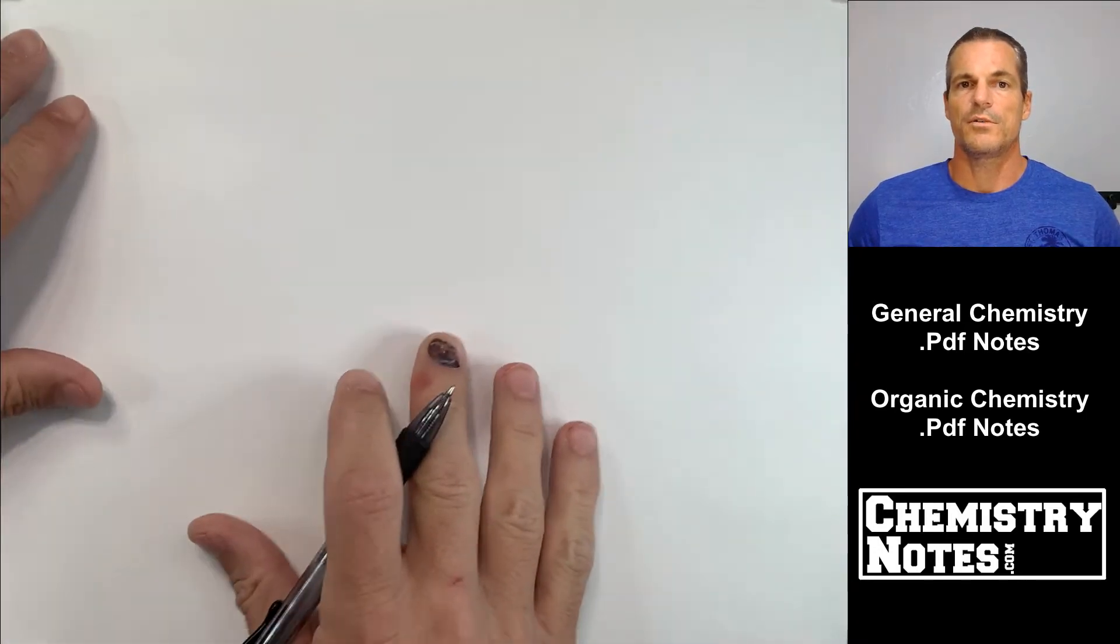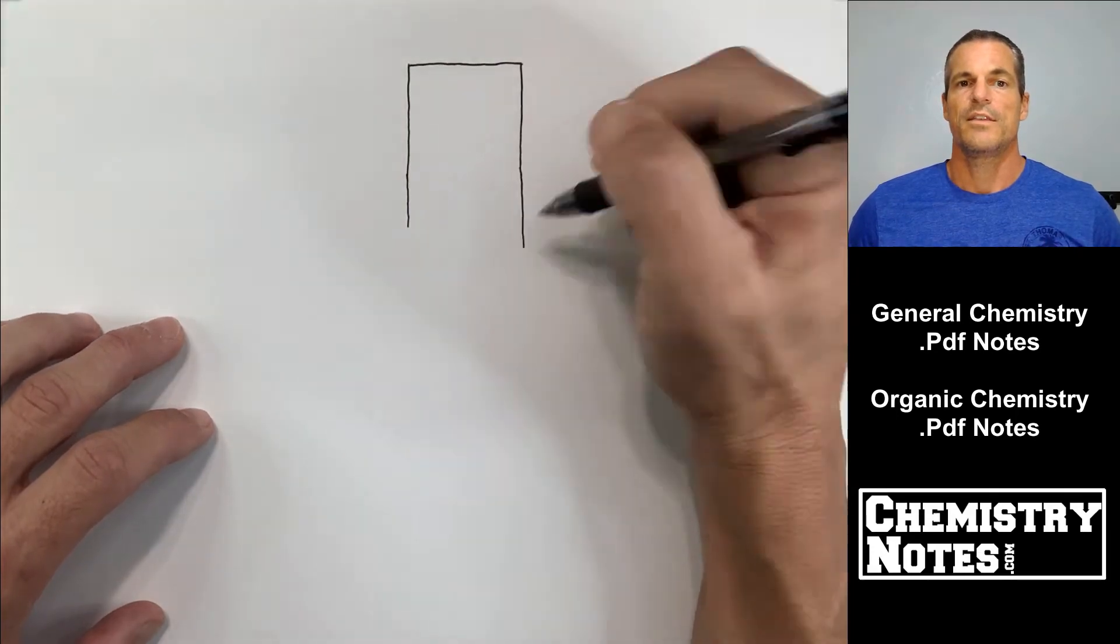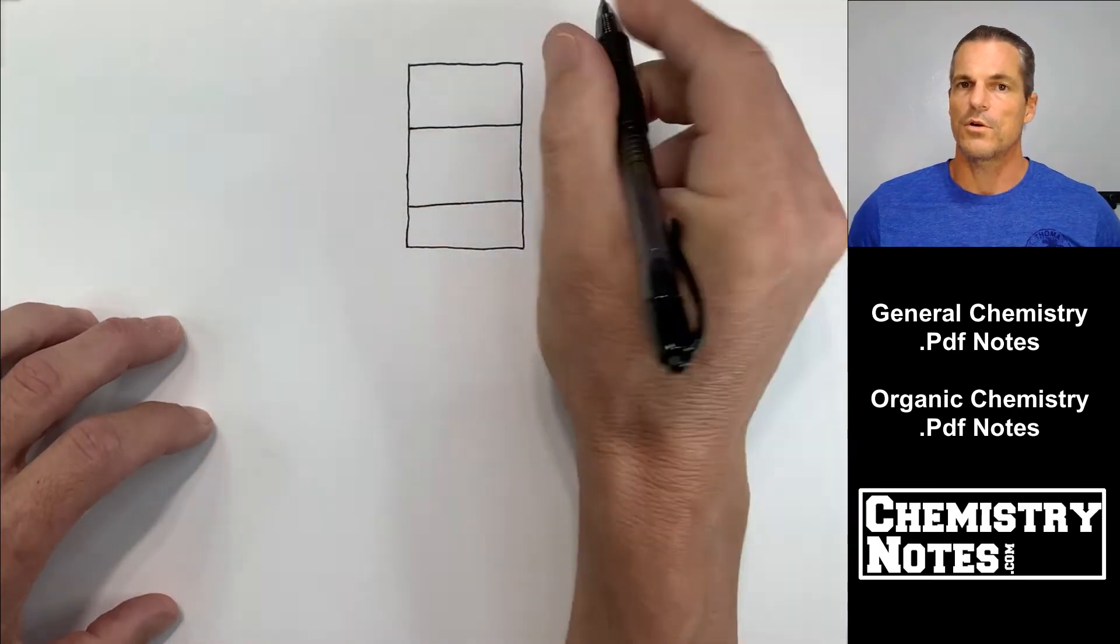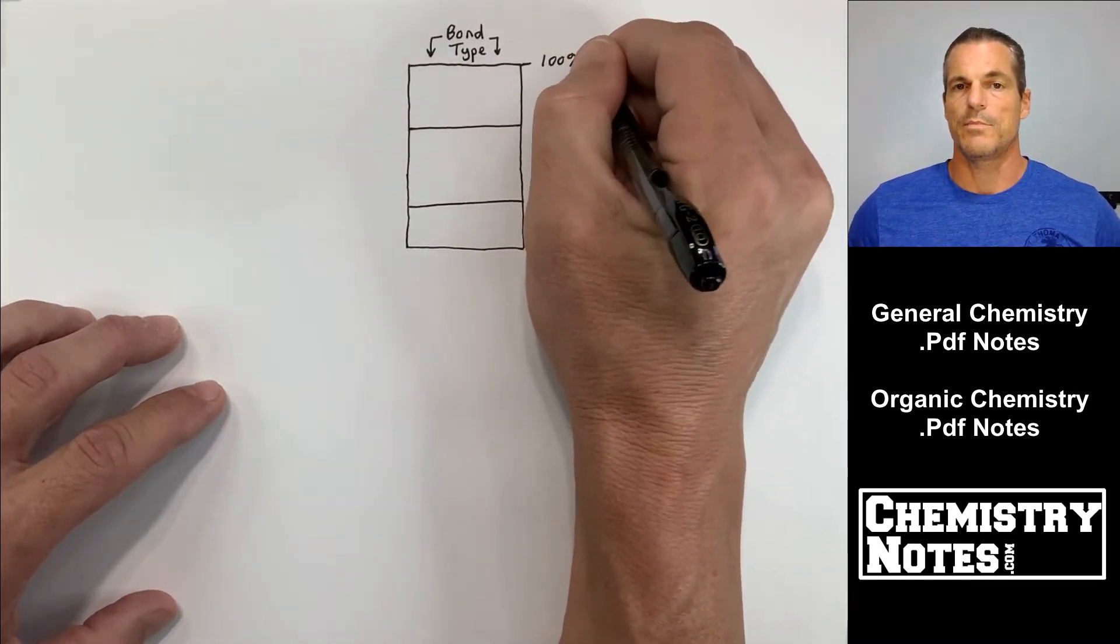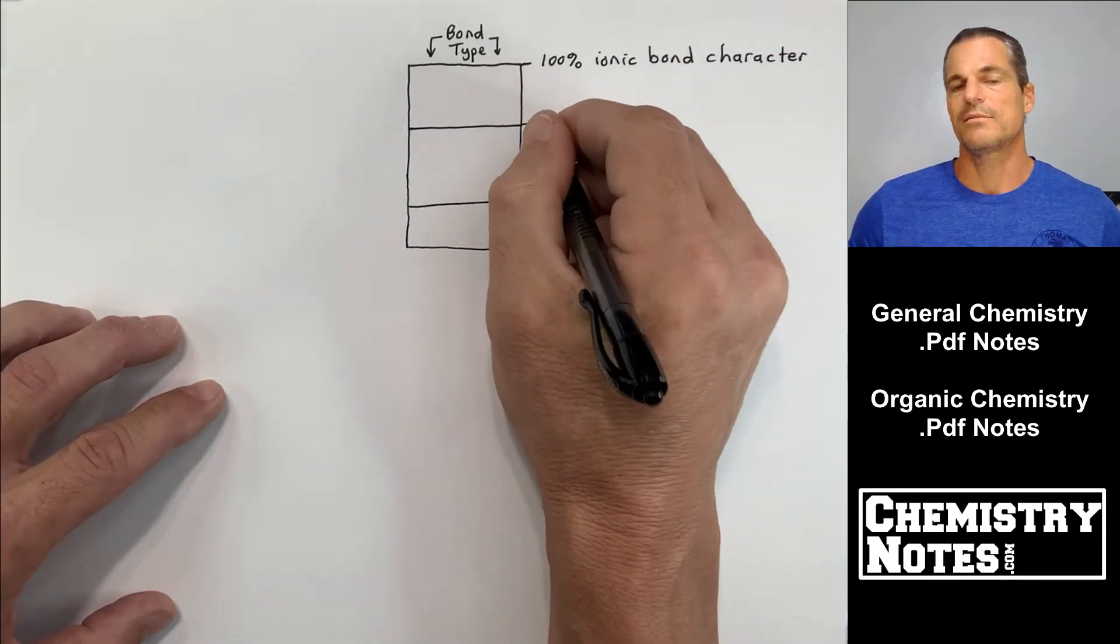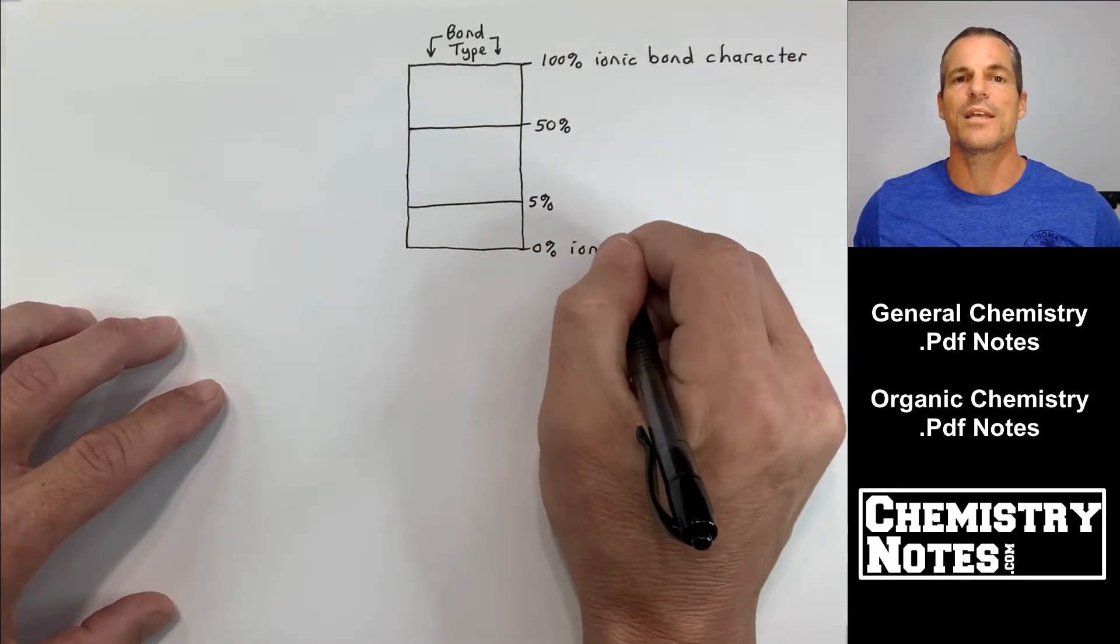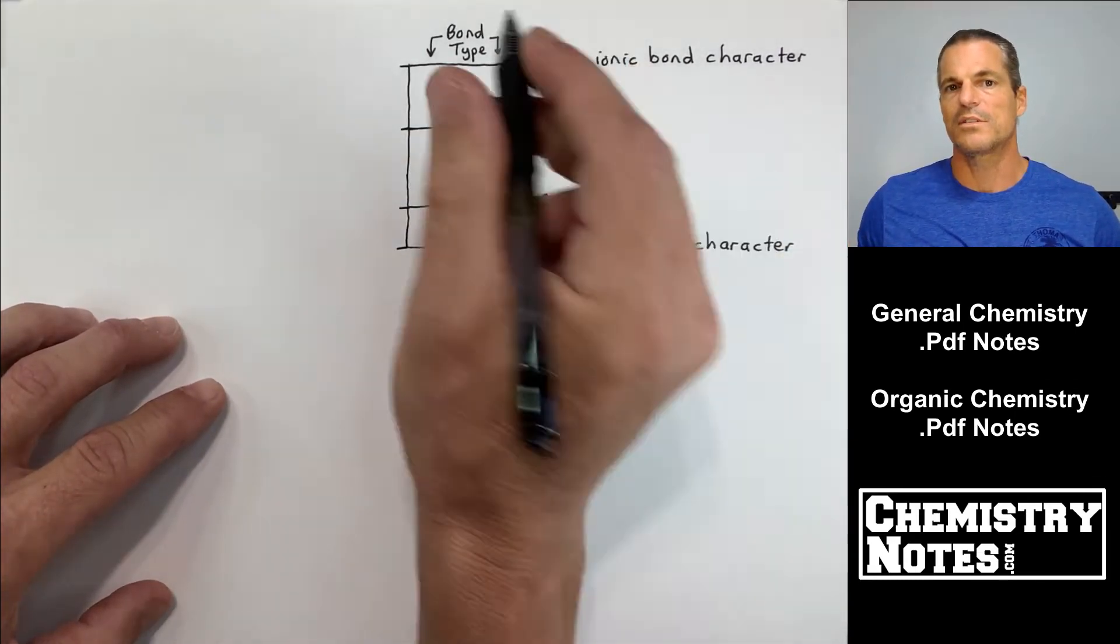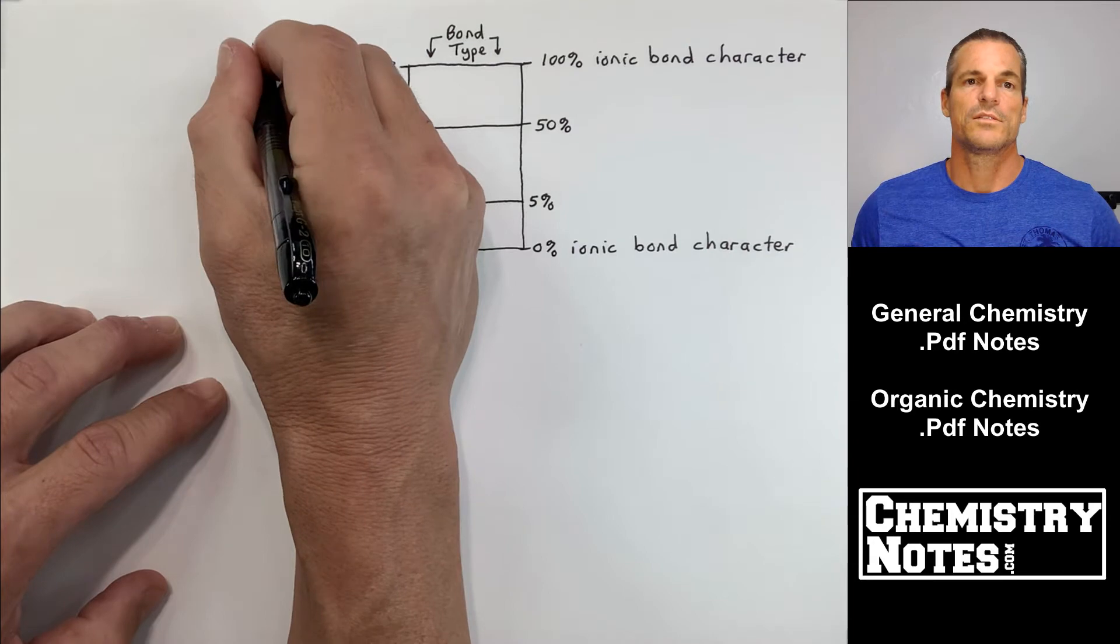So at the top of page two of our notes here, give me a second or two as I draw a little chart for us. And this chart is going to tell us if a bond is ionic, polar covalent, or non-polar covalent. So bond type is going to be inside the box. And then the right hand side, we'll use the scale.